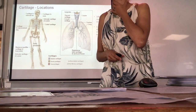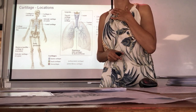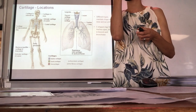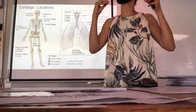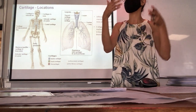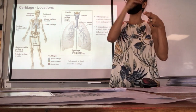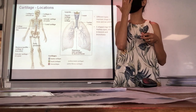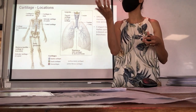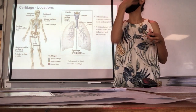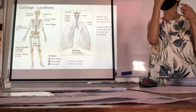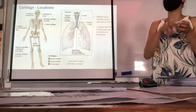A student asked why noses bleed if cartilage has no blood vessels. The cartilage itself doesn't have its own blood supply, but it's surrounded by cells that do have a blood supply. Nutrients diffuse from blood into the cartilage. When you're hit on the nose, you're not only hitting cartilage — you're hitting the surrounding sinus area which does have blood vessels, which is why it bleeds. Nosebleeds come from the olfactory region, not the cartilage.